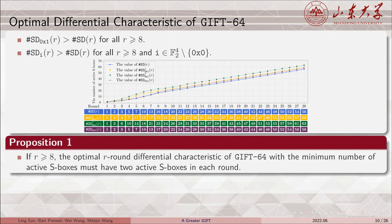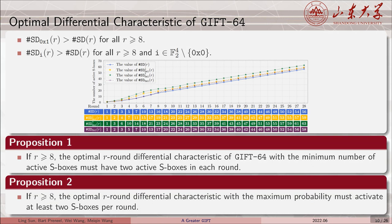So we draw the first proposition: if R is greater than 7, the optimal R-round differential characteristic of GIFT-64 with the minimum number of active S-boxes must have two active S-boxes in each round. Then, with a similar analysis regarding the differential probability, we give the second proposition: if R is greater than 7, the optimal R-round differential characteristic with the maximum probability must activate at least two S-boxes per round. Now, it seems that differential characteristics activating two S-boxes in each round play a crucial role in the security evaluation for GIFT-64. So we wonder whether we can uncover more properties of these characteristics apart from the quantitative information about active S-boxes.